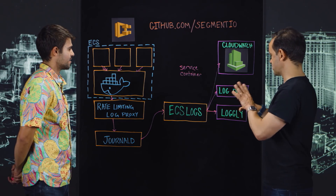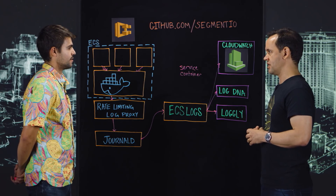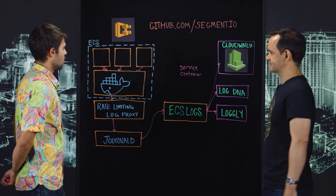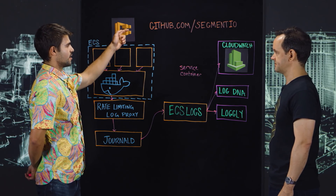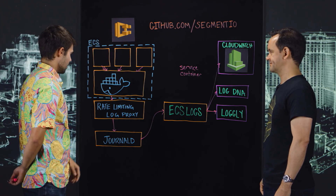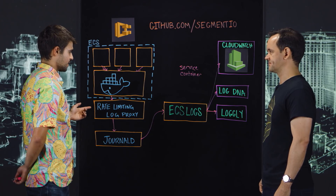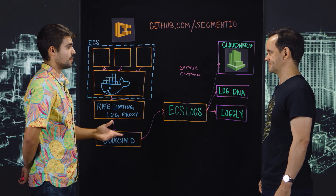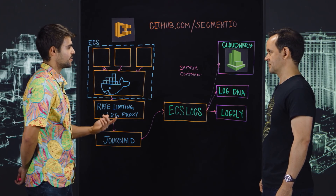You've open sourced all these components you've built. How can customers find these open source tools to experiment themselves? All of these are put up on GitHub under our SegmentIO organization. There you can find the rate limiting log proxy, ECS logs, as well as our CW logs CLI tool for actually interacting with CloudWatch.